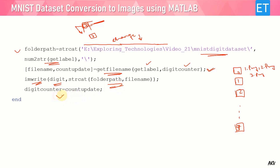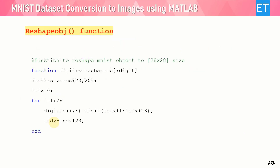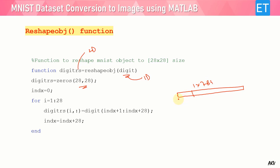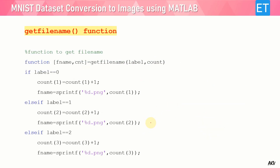Now let's see what is inside the reshape_object function. It's simple: it receives the digit in 1D format and returns it as 2D. First it initializes a 28 by 28 zero matrix. Then, since the 1D image is 1 by 784, it takes chunks of 28 values and places them one by one to build the 28 by 28 2D image — as I already explained in the conversion logic slide.